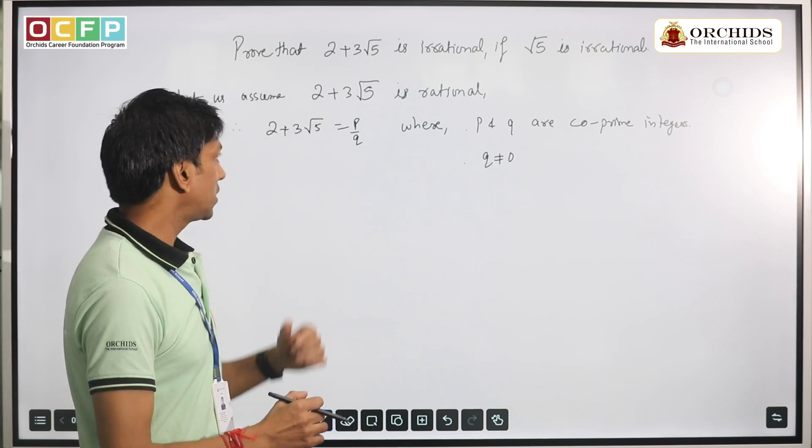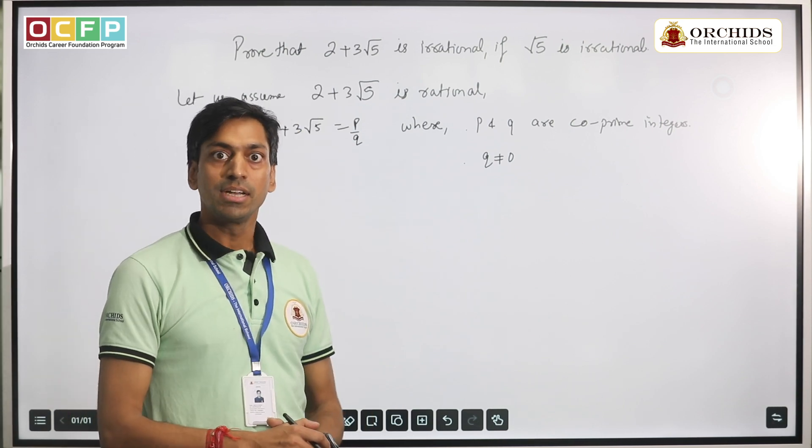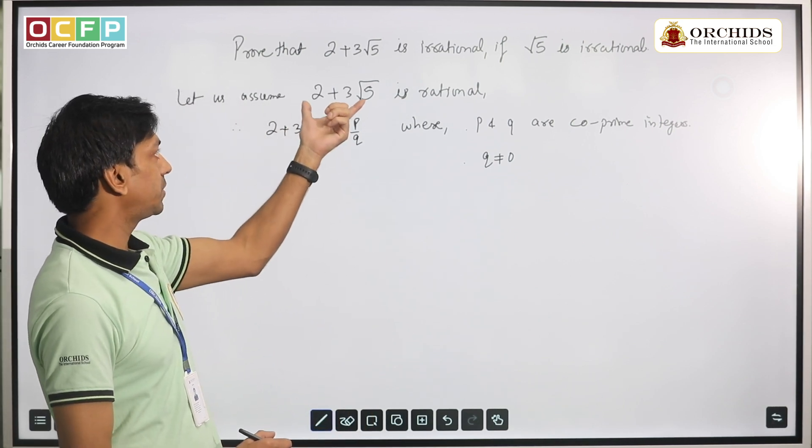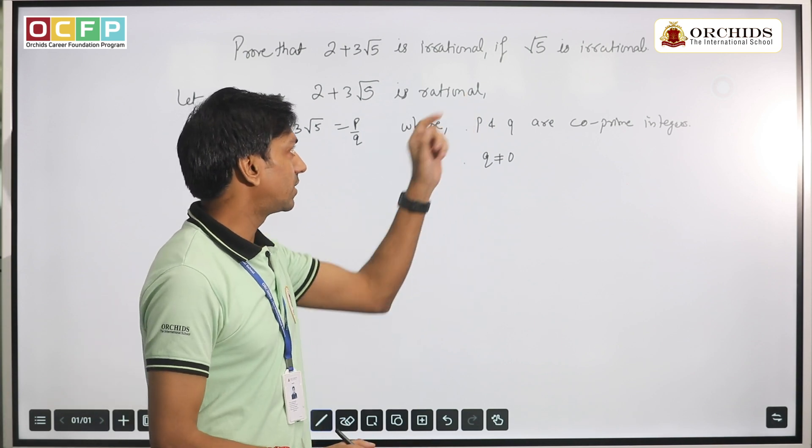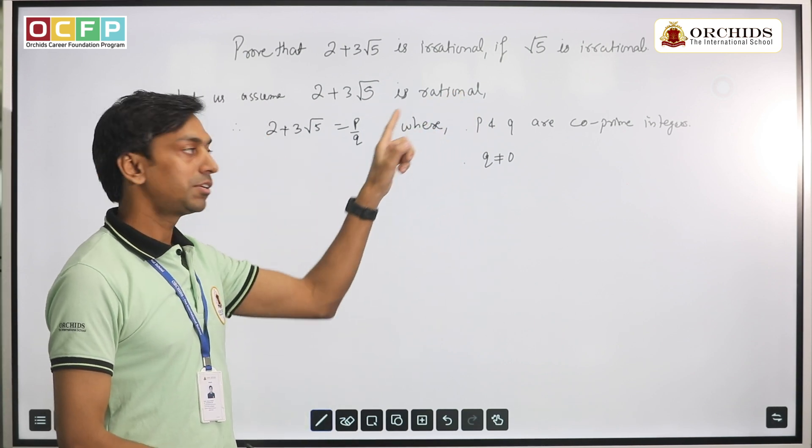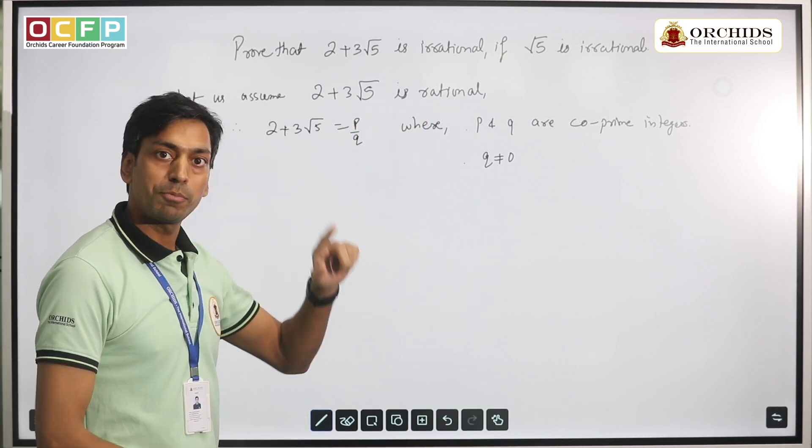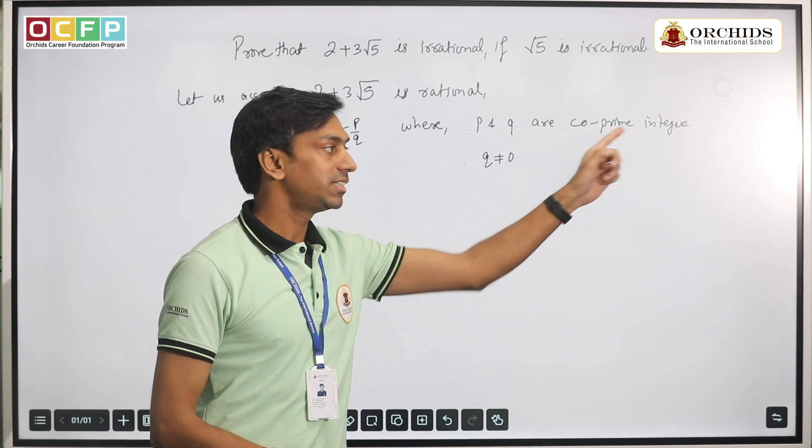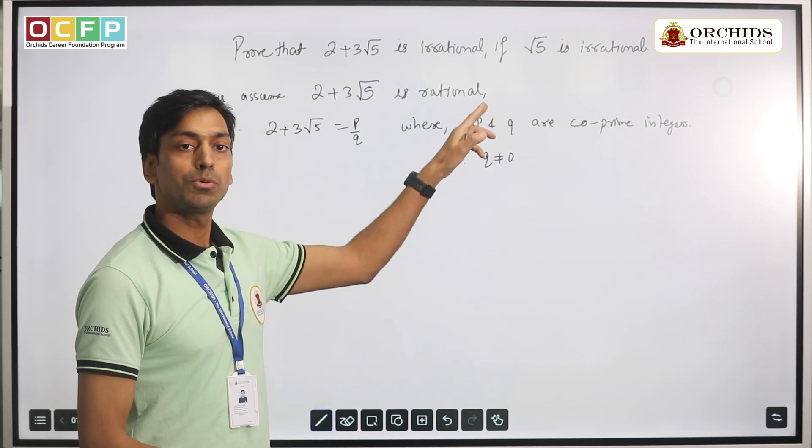We are going to start this problem with a contradictory statement. We assume that the given expression 2 + 3√5 is rational. Since it is rational, we can write it in p/q form, where p and q are coprime integers and q ≠ 0. These two conditions are very important; we should state them separately.